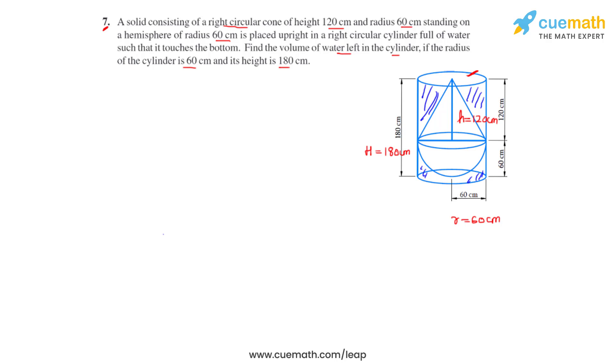So now what we can say is the volume of cylinder will be equal to the volume of solid which is the sum of hemisphere and the cone's volume plus the volume of water left.